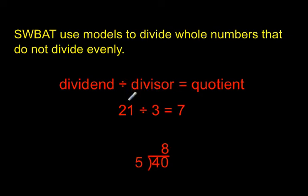Here are some quick examples. 21 divided by 3 equals 7. The dividend, divisor, and quotient. And if you see a problem like this, using the fraction box, 40 divided by 5 equals 8. You read it inside out.